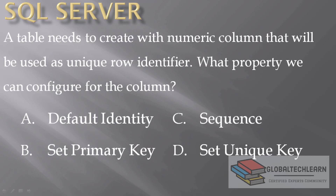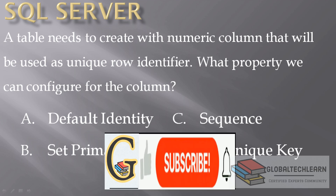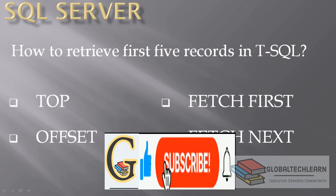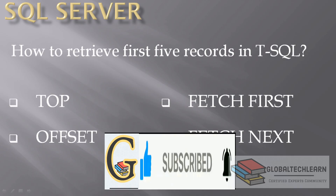Today I will ask you a question that you can answer in the comments. The question is: a table needs to be created with a numeric column that will be used as a unique row identifier — so which property can we configure while creating this table? We can use DEFAULT, IDENTITY, set PRIMARY KEY, use SEQUENCE, or set a UNIQUE KEY on that column. You can attempt the answer in the comments. I will provide a hint to the correct answer so you can understand it. This is all for this video — if you have any questions, you can post in the comments.